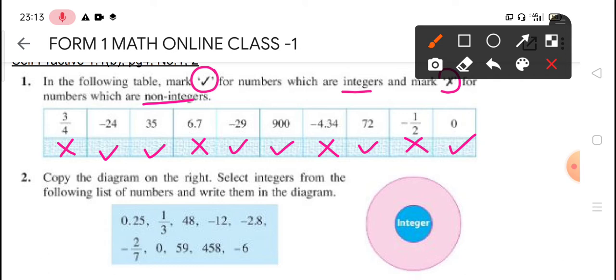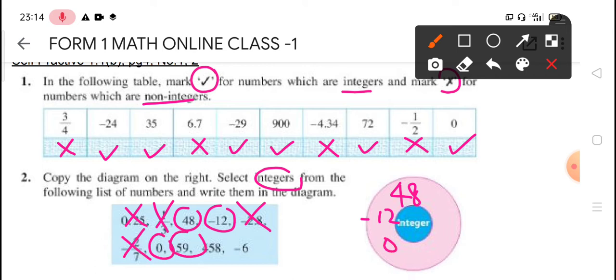And now we look at number two. Select integers from the following list of numbers and write them in the diagram. So this diagram we call circle map. So first one, 0.25, non-integer because decimal. Second, 1 over 3 also non-integer because this is a fraction. 48, yes, whole number, so we put 48 here. Next, negative 12, yes. Next, negative 2.8, no, 2.8 is decimal, so non-integer. Next, negative 2 over 7 also non-integer because it is fraction. 0, yes. 59, yes. 458, yes. And lastly, negative 6, yes.